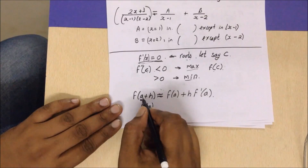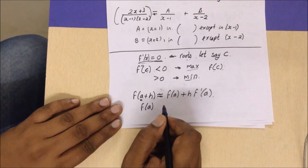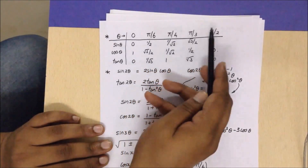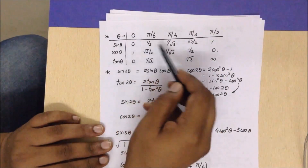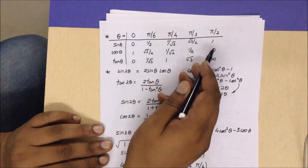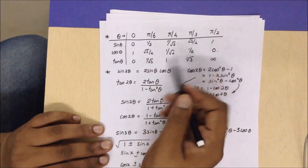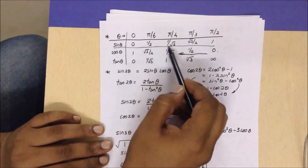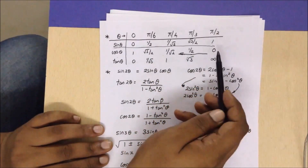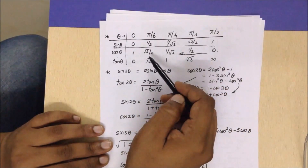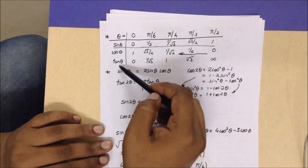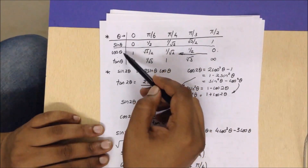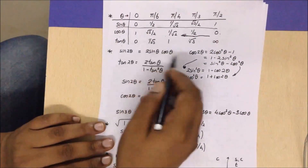These are standard results you should know: for various values of theta, you should know the sine values. This helps not only in trigonometry but in other chapters involving trigonometric functions. You can recollect cosine values by just reversing the order of the sine values, and tangent is the division of sine by cosine.